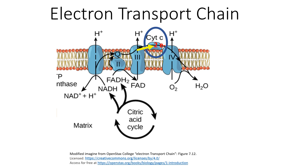Cytochrome C oxidizing complex three releases energy that complex three uses to pump four hydrogen ions from the matrix into the intermembrane space.